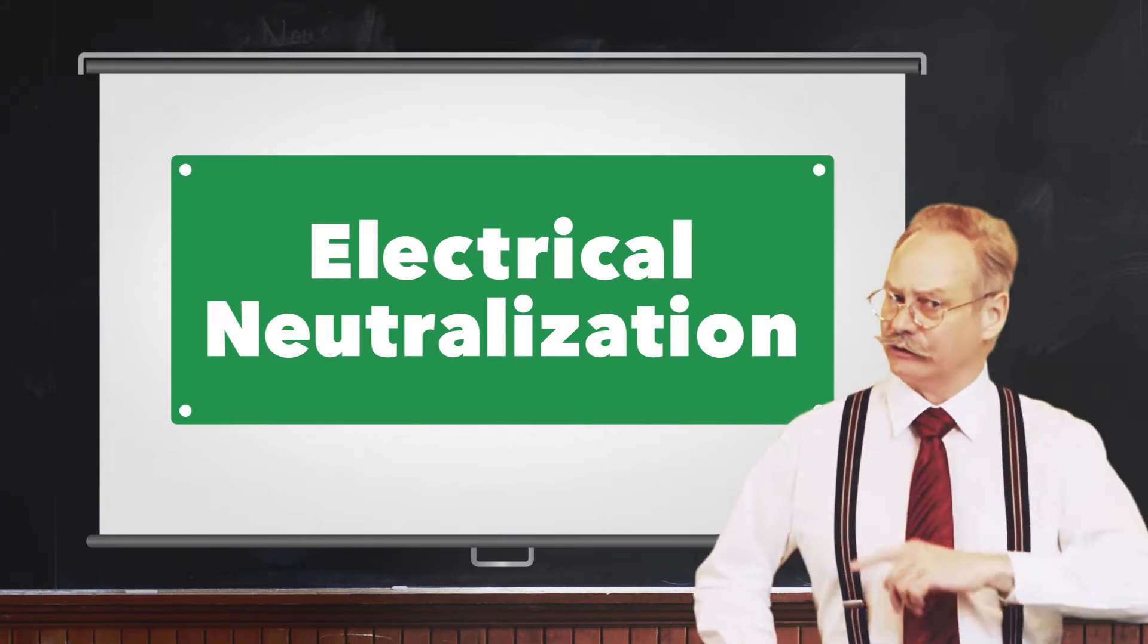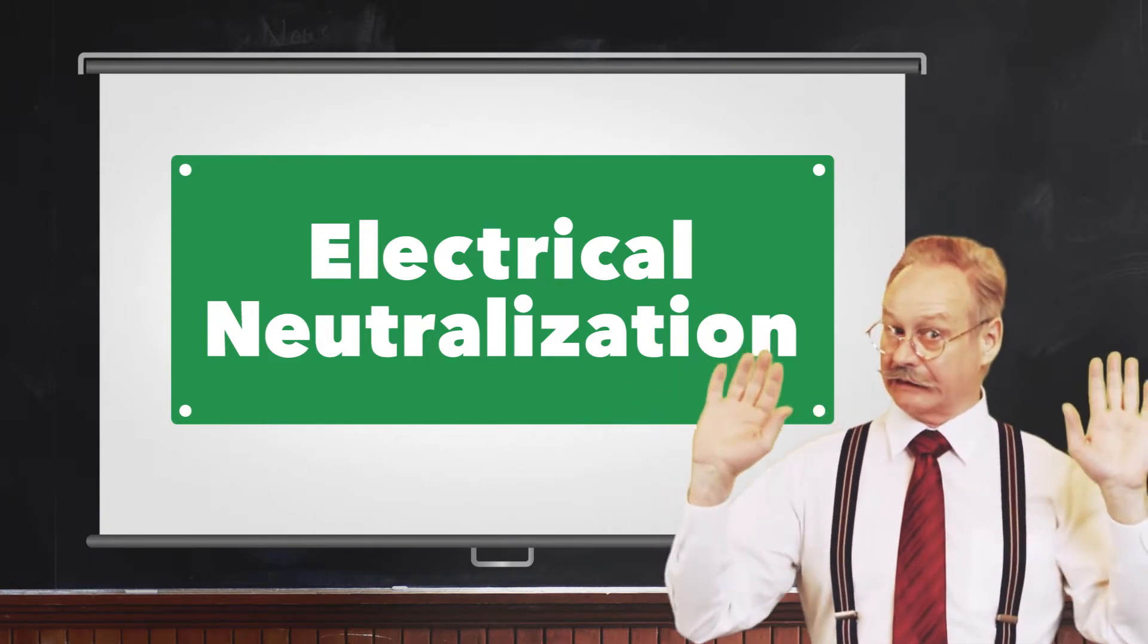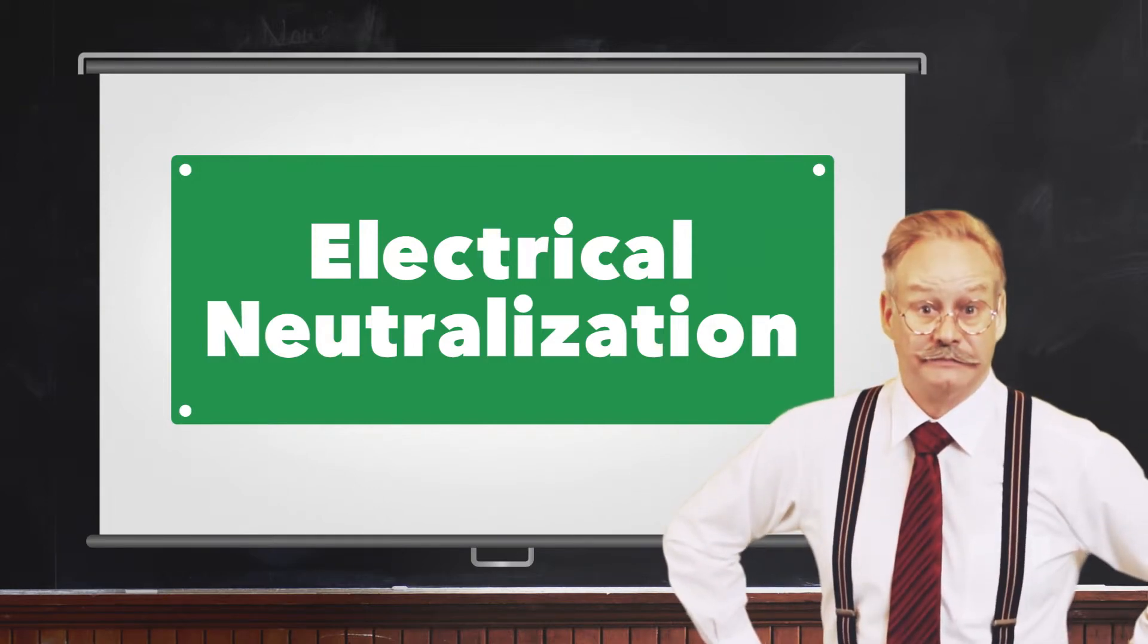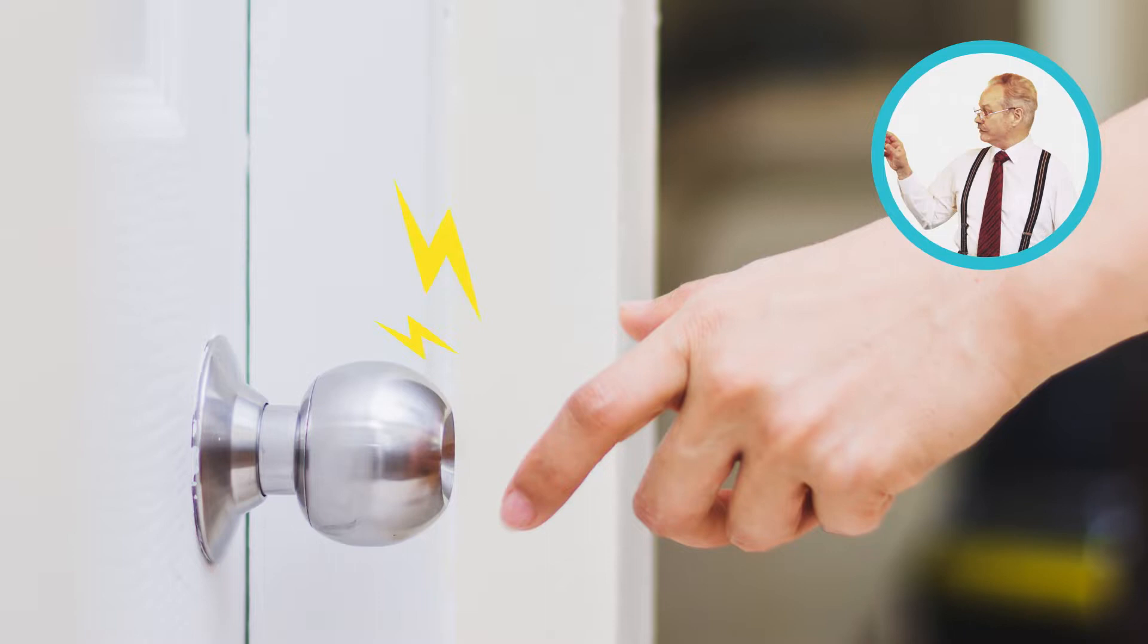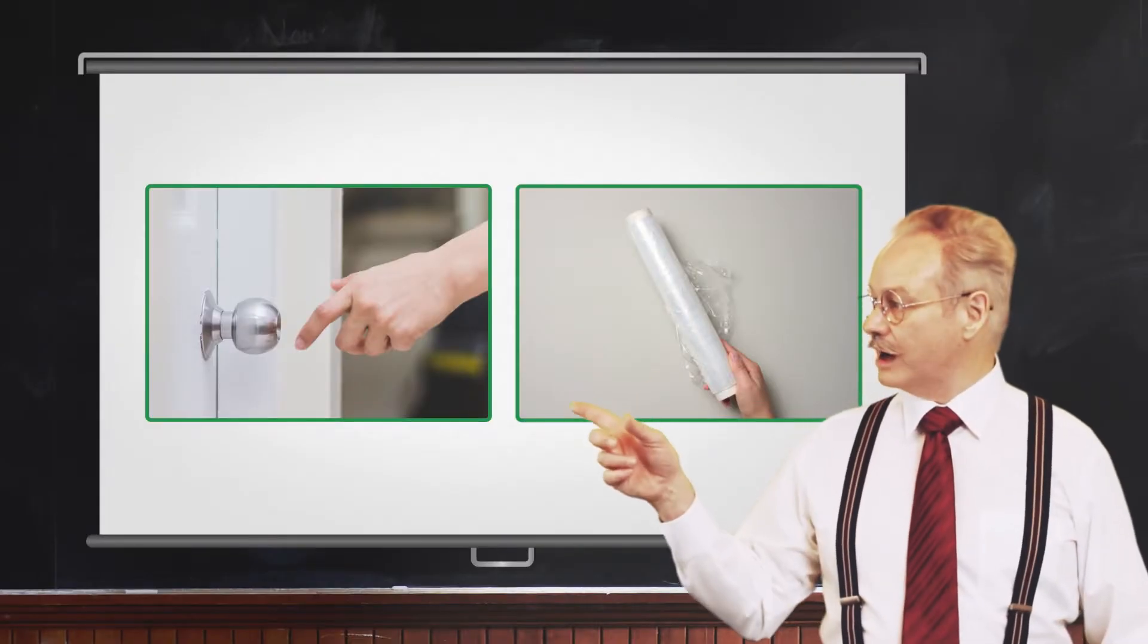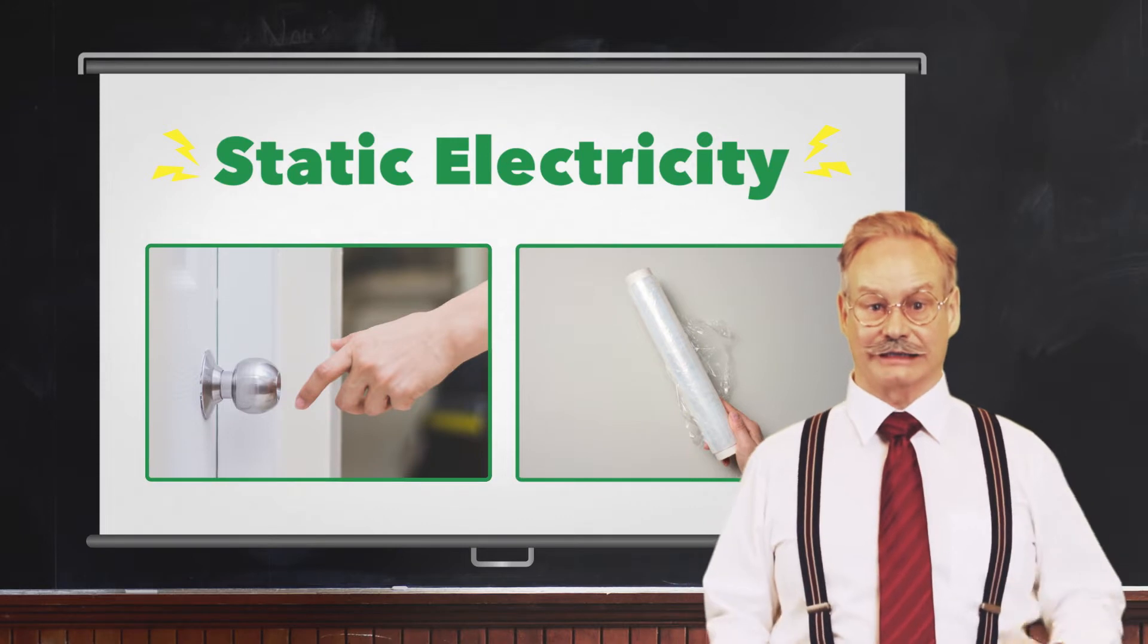I'm sure you know about static electricity, but let's take a look anyway. You get a shock when you touch a doorknob. Your plastic wrap sticks together. These phenomena are caused by static electricity.